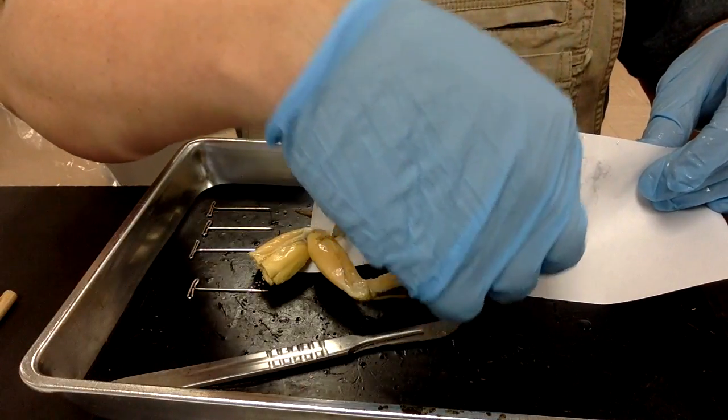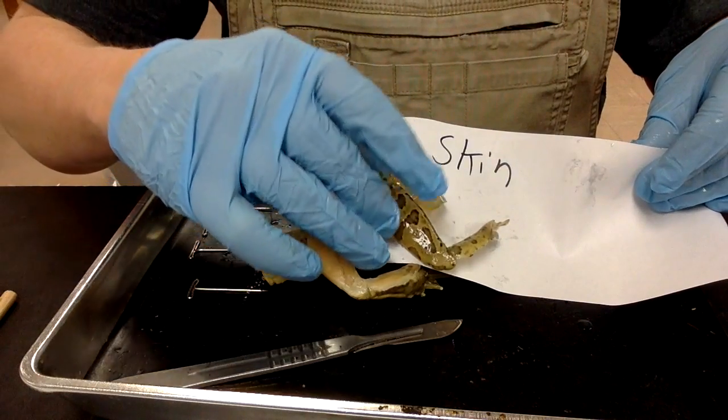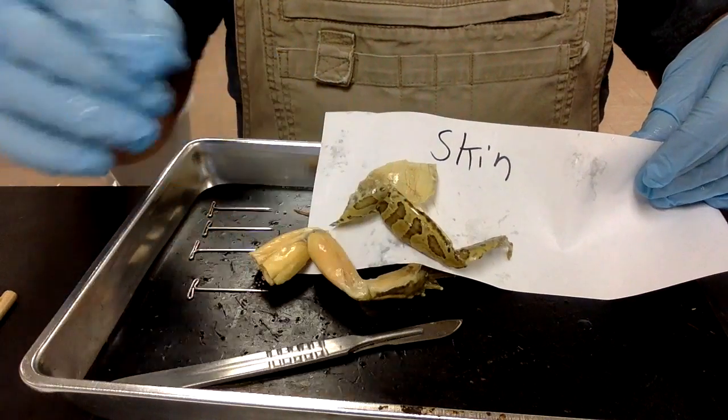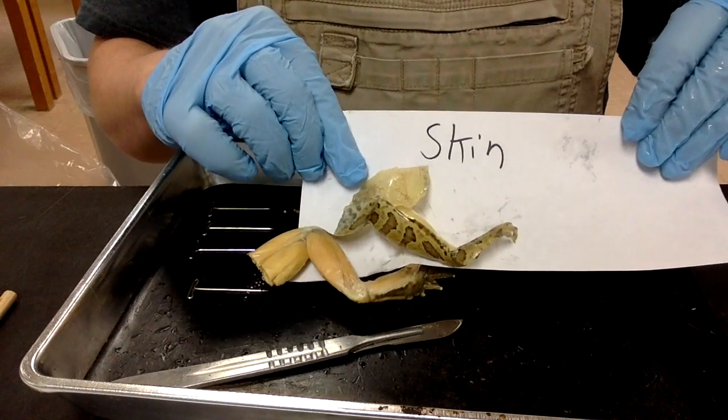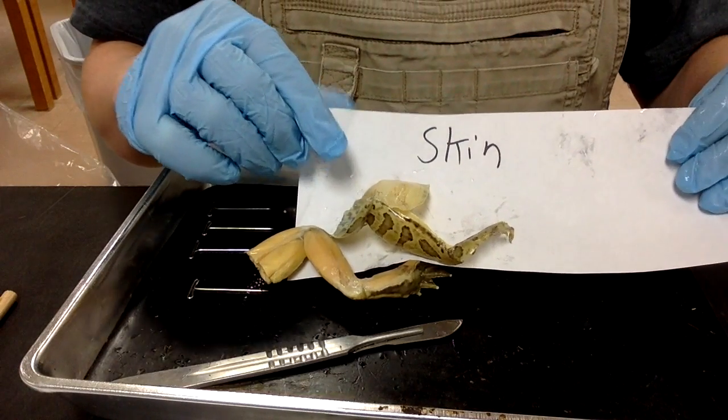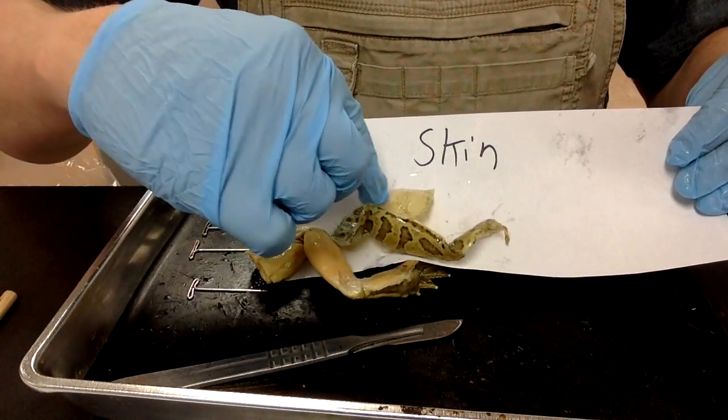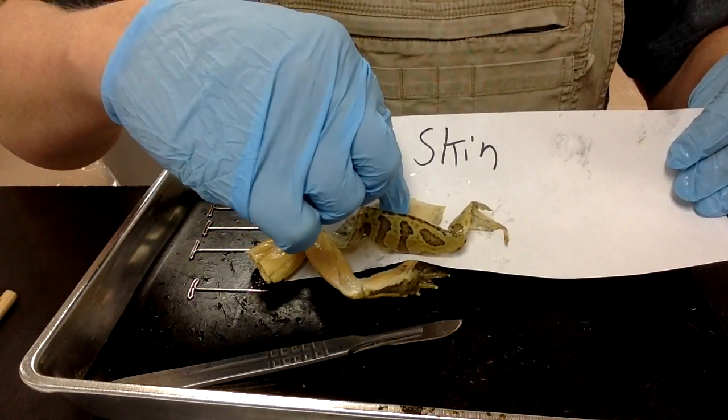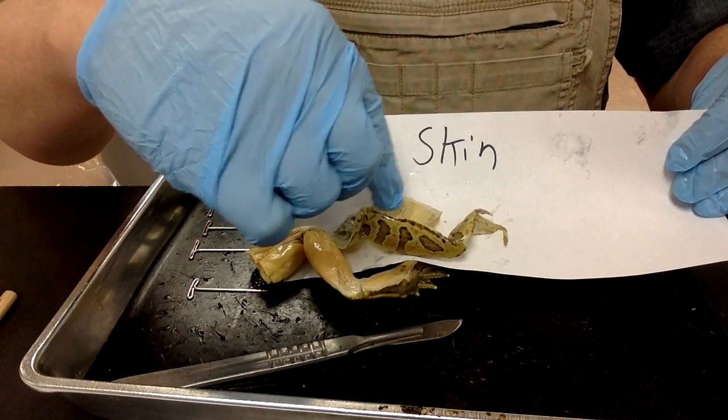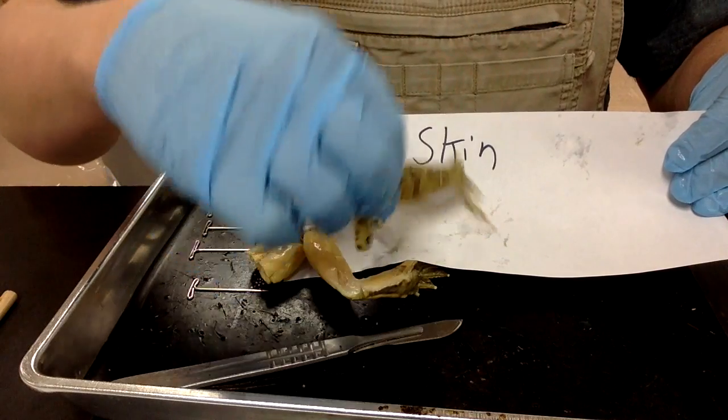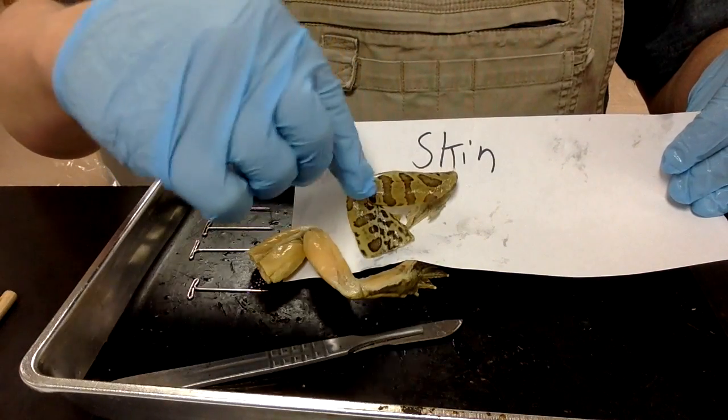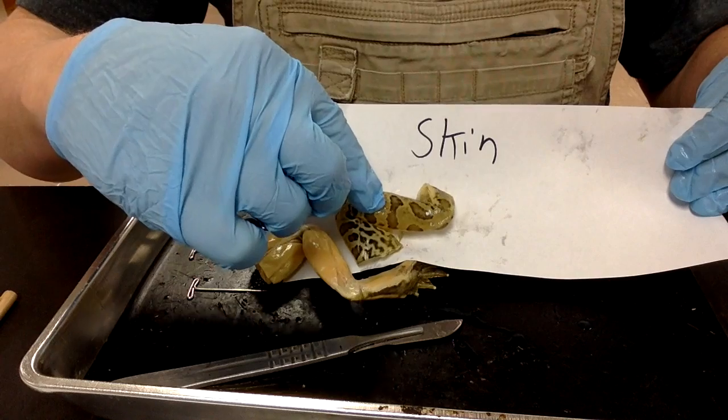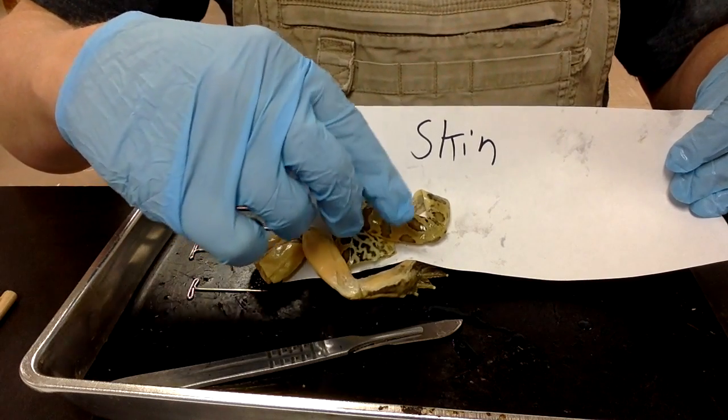Some people describe skin as also acting like an organ. I'm perfectly fine with that. You'll notice some things on both sides. This is real interesting under a dissecting microscope. So use that. You can see some little capillaries that nourish the skin, and you'll notice the melanin that's providing, especially that dorsal coloring.